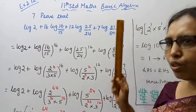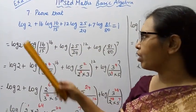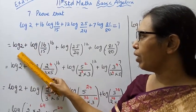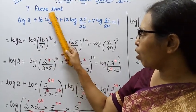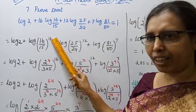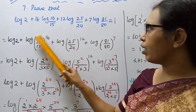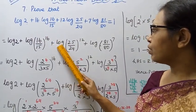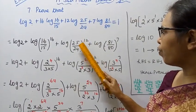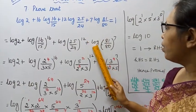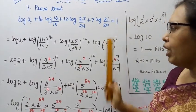This should be proven. We will go through all the steps. Using the log power rule, the coefficient in front of each log can be moved as the power: 16 log(16/15) becomes log(16/15) whole power 16, plus log(25/24) whole power 12, plus log(81/80) whole power 7. We need to prove this equals 1.